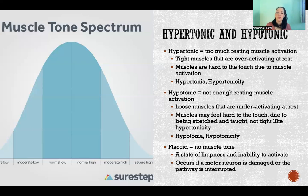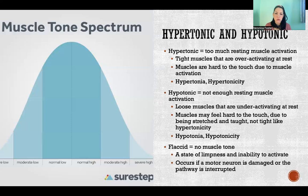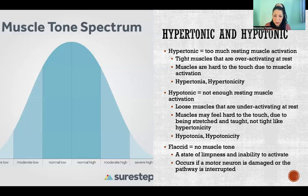If a muscle has no muscle tone — no resting muscle activation — we would say that muscle is flaccid, or that they're experiencing flaccidity. It's a state of limpness and inability to activate. This can occur if there is damage to the motor neurons that supply that muscle, or damage or interruption anywhere along the motor pathway where we're sending motor commands to that muscle. There are all sorts of injuries, viruses, and other things that can cause that problem. We always want muscle tone in every muscle at all times, because that means the muscle is idling and ready to receive a command for activation.